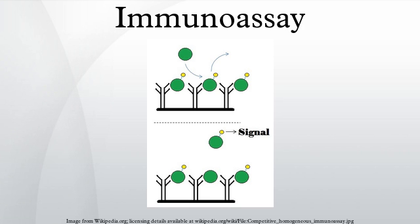History: Rosalind Sussman Yalow and Solomon Berson are credited with the development of the first immunoassays in the 1950s. Yalow would accept the Nobel Prize for her work in immunoassays in 1977, becoming the second American woman to have won the award.